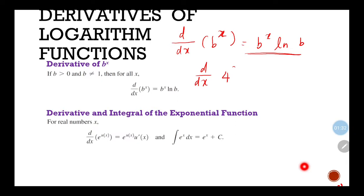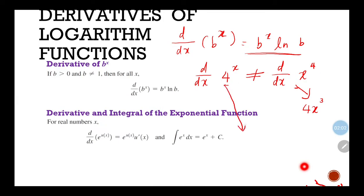Let's see an example. We want to find the derivative of 4 to the power of x. Bear in mind, this is not the same as x to the power of 4. If it were x to the power of 4, we would get 4x to the power of 3. But these two are not the same.